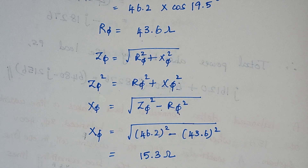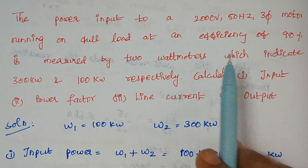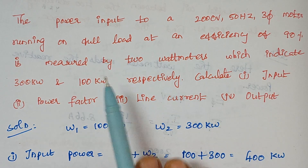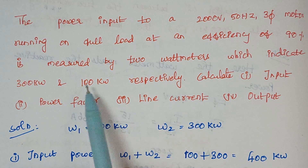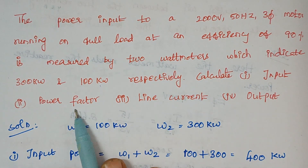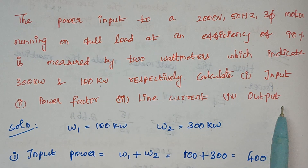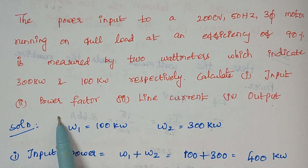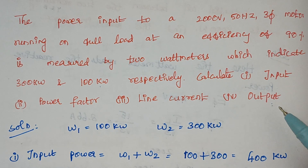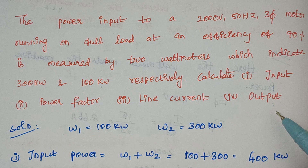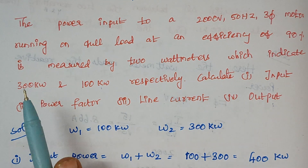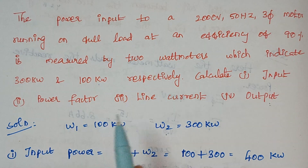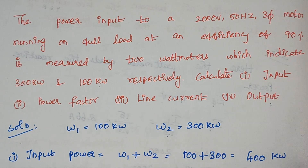The next problem: the power input to a 2000 volt, 50 Hz three-phase motor running at full load with an efficiency of 90% is measured by two wattmeters which indicate 300 kW and 100 kW respectively. Find input power, power factor, line current, and output. The wattmeter readings are given — 100 kW and 300 kW. The least value is taken as W1, so W1 = 100 kW and W2 = 300 kW.